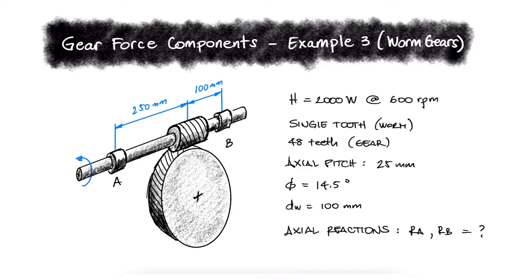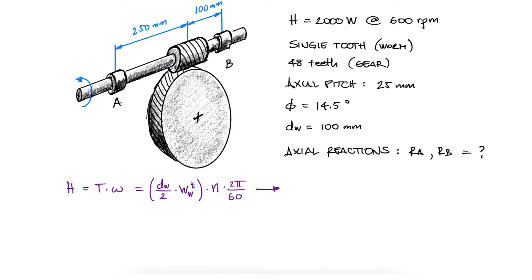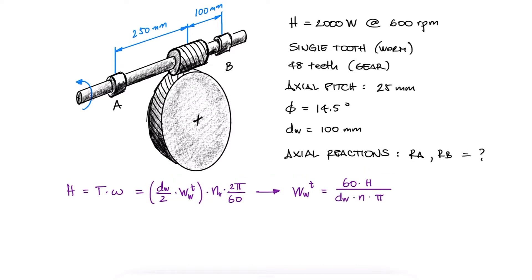To find the tangential component and therefore the axial component of the interaction force, we'll carry out the same procedure we've carried out in the past. With the power and revolutions per minute information, we can calculate that tangential component, and to find the overall interaction force W, we realize that we first need to calculate the lead angle, lambda.